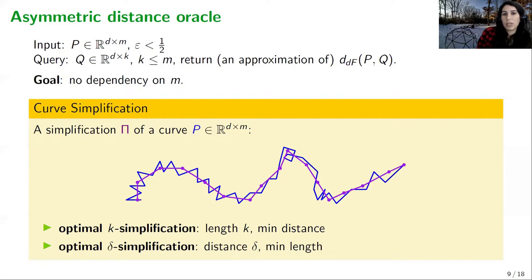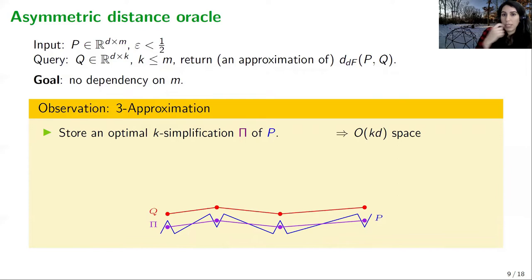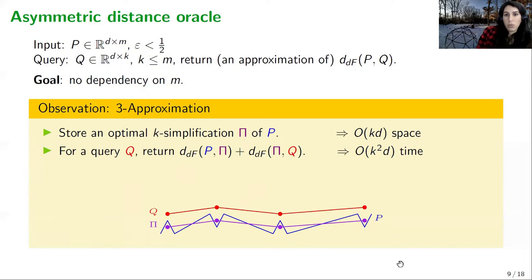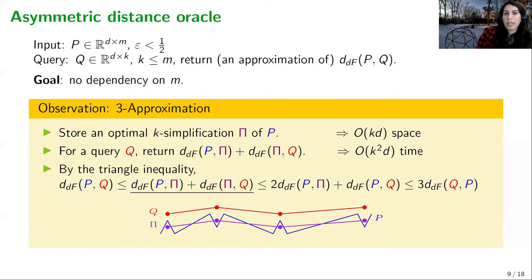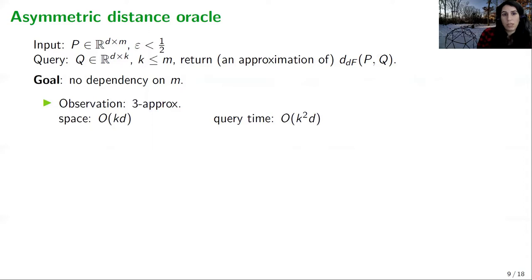Using the idea of simplification we can get a 3-approximation distance oracle with space independent of m. We simply store an optimal k-simplification pi of p, and for a query curve q we only need to compute the distance between q and the simplification. Using a simple triangle inequality argument, we get that the sum of these two distances is a 3-approximation of the distance between p and q — giving us 3-approximation with O(kd) space and O(k²d) query time.